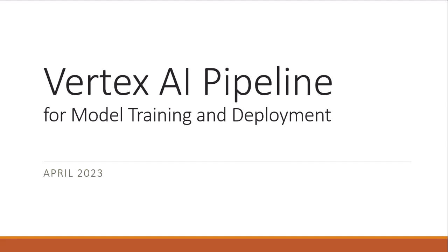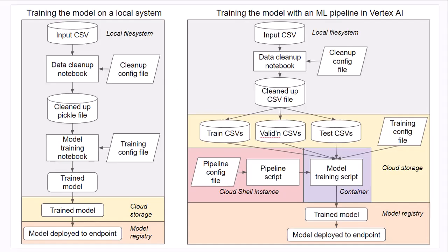Hi, this is Mark Ryan. In this video I'll show you how you can create a Vertex AI pipeline that will automate going from a CSV file to a trained Keras model deployed in a Vertex AI endpoint. We'll be going through how you can go from training the model using a notebook running in Colab, where once the model has been trained it gets deployed to an endpoint in Vertex AI, to the situation on the right where you're starting with the CSV file and running a script that takes you all the way from that CSV file to a trained model deployed in a Vertex AI endpoint.